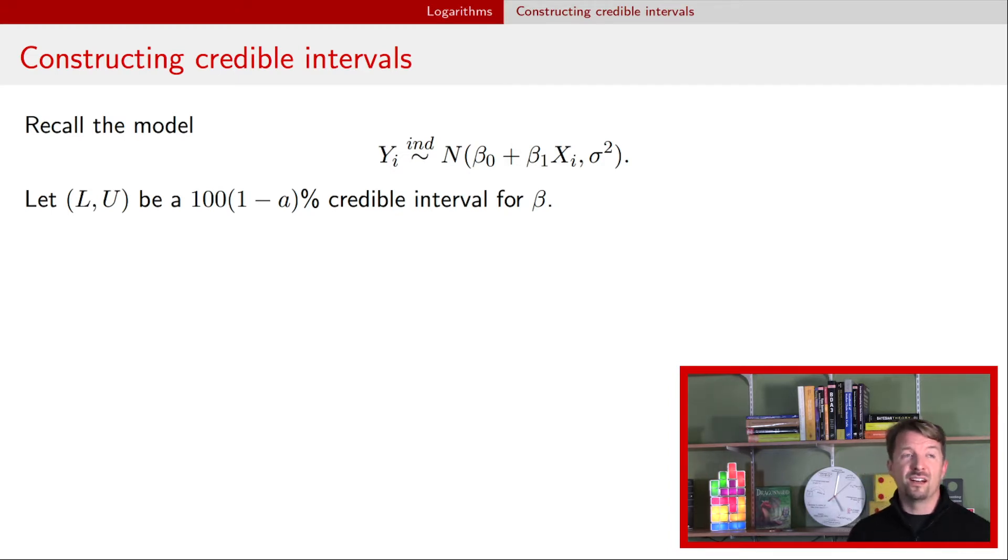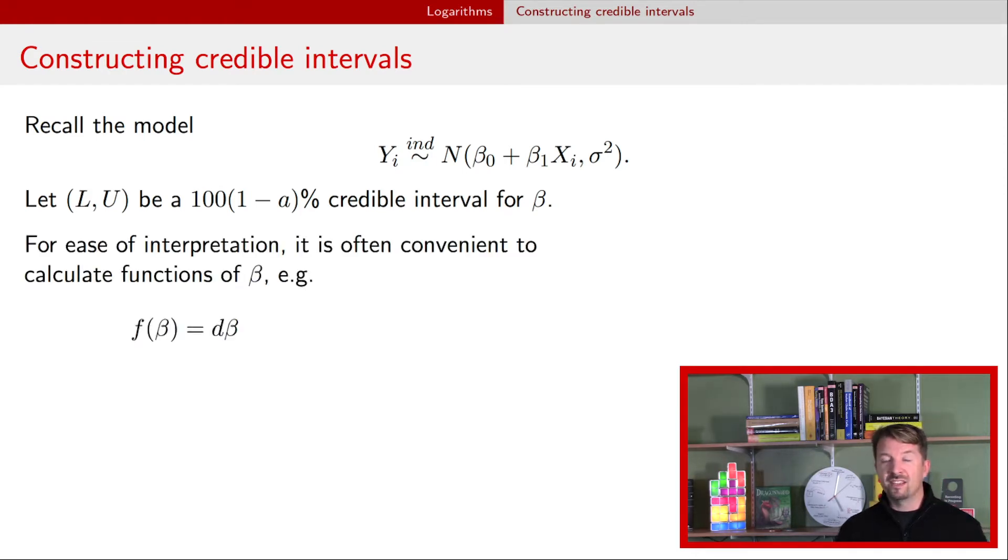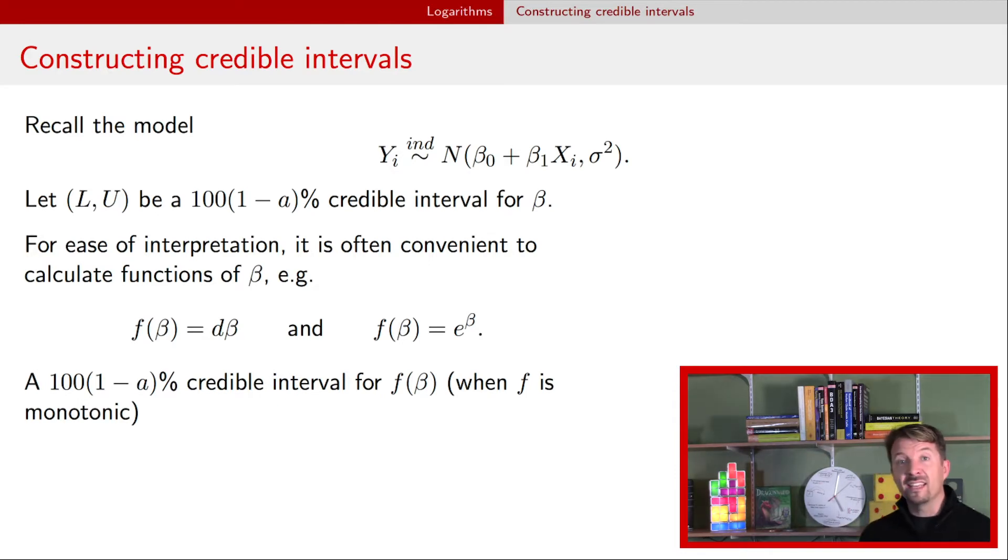But now in the previous video, what we saw is that we're often talking about functions of these beta parameters. So in particular, we talked about a function like D times beta, or we talked about e raised to the beta power. And when you have those functions, you might want to have a credible interval for that function of the parameter beta. It turns out that it's actually pretty straightforward to get that. And the key thing is that the function you're dealing with has to be monotonic. And what monotonic means is that the function is only increasing or decreasing. That is, it doesn't go up and then come back down or go down and then come back up. So as long as it's a monotonic function, what I'm going to show you will work.